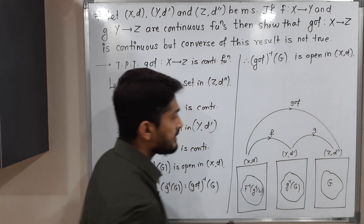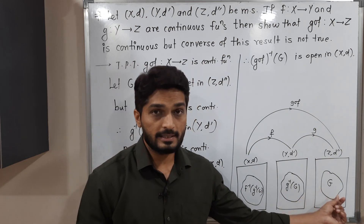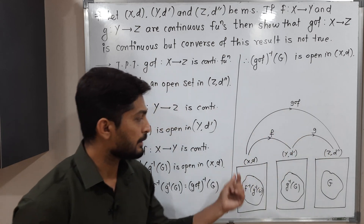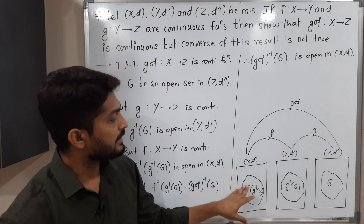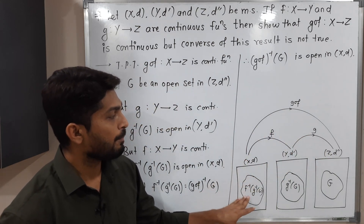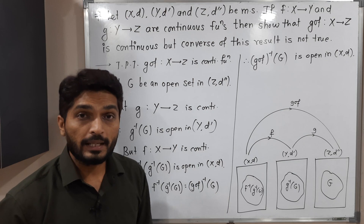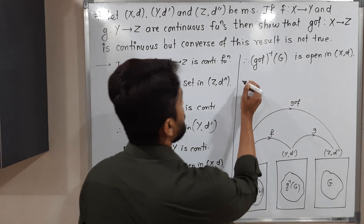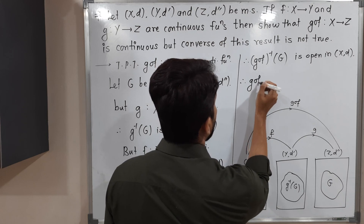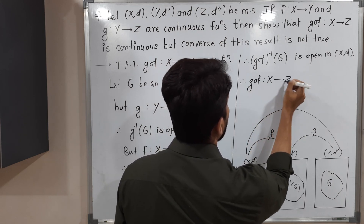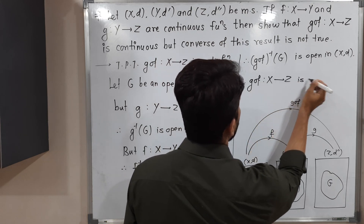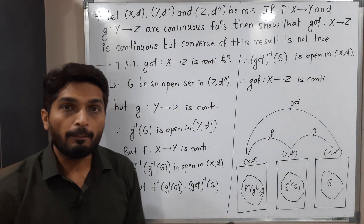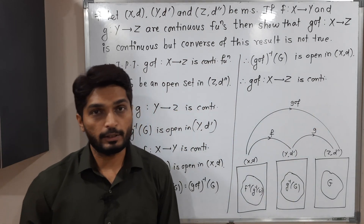We started with an open set in ZD double dash and proved its inverse image, G composite F inverse of G, is open in XD. So therefore we can say that G composite F from X to Z is a continuous function. In this way we proved the composition of two continuous functions is continuous.